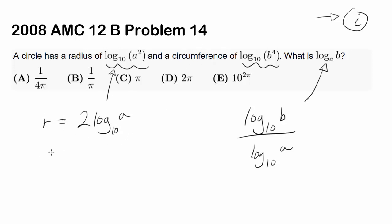And we know the circumference, which is 2 pi R, is equal to log base 10 of B to the fourth. You can bring this 4 out, so 4 times log base 10 of B.